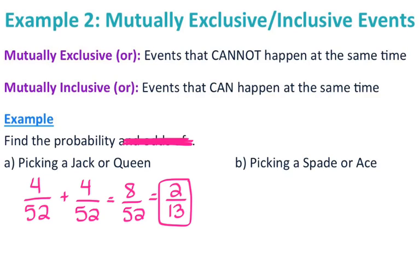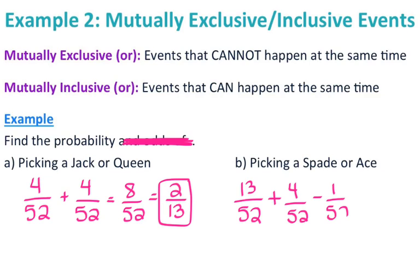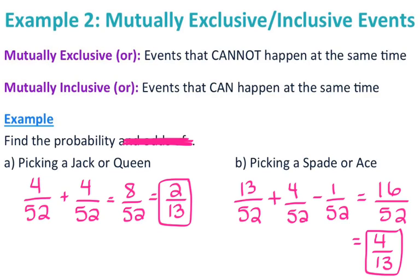For part B, picking a spade or an ace — can you have an ace of spades? Yes, you can. So that is mutually inclusive, where events can happen at the same time. The probability of picking a spade is 13/52, and the probability of picking an ace is 4/52. Now there is 1 ace of spades, so you need to subtract that overlap. So 13 + 4 − 1 = 16, giving us 16/52, which reduces to 4/13.